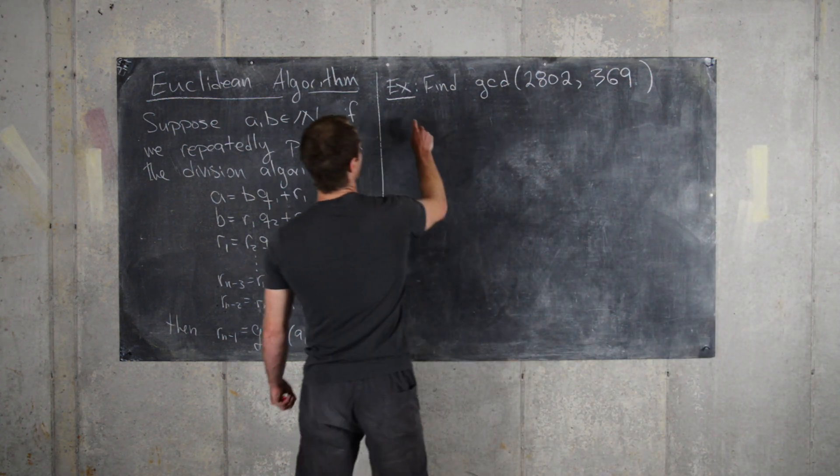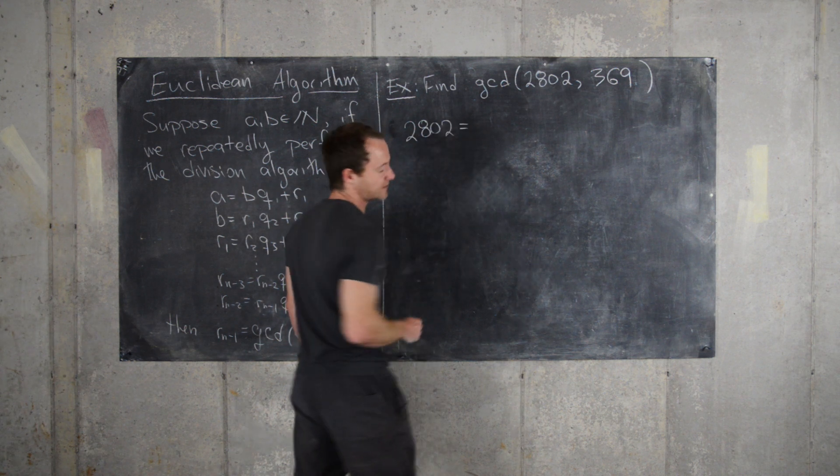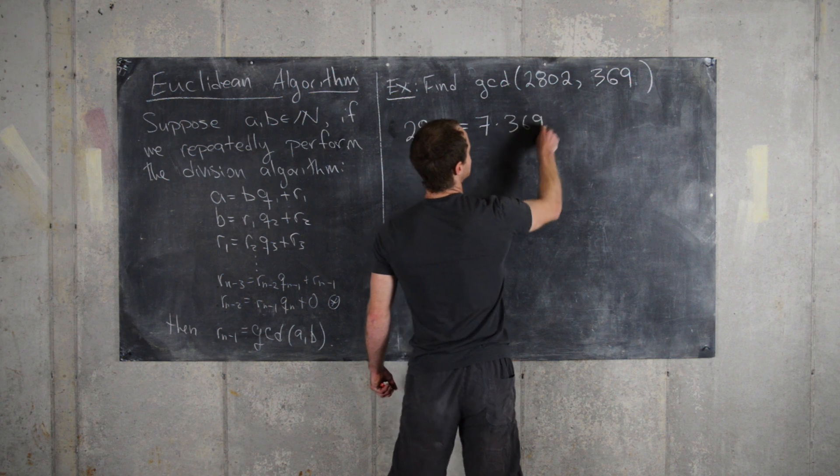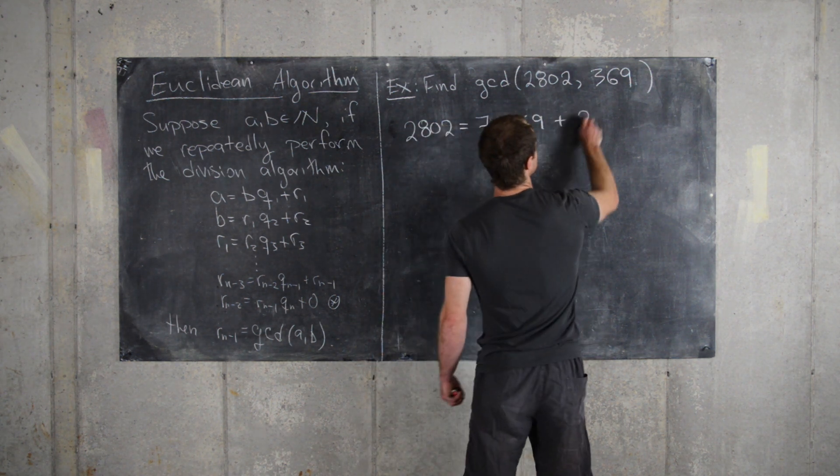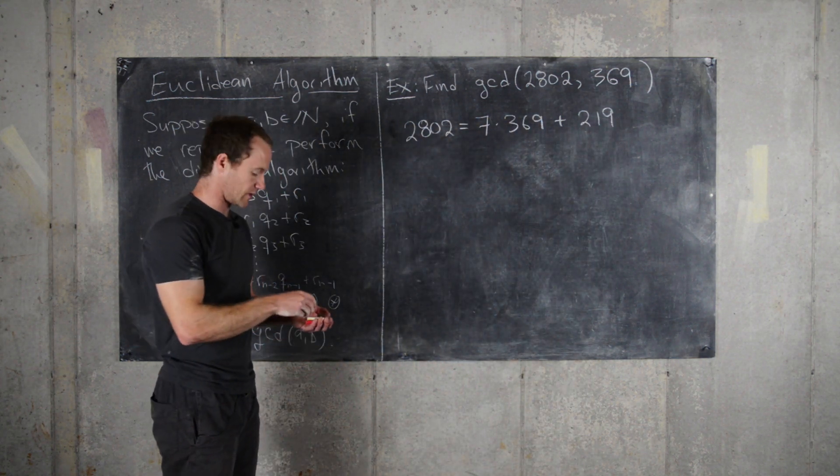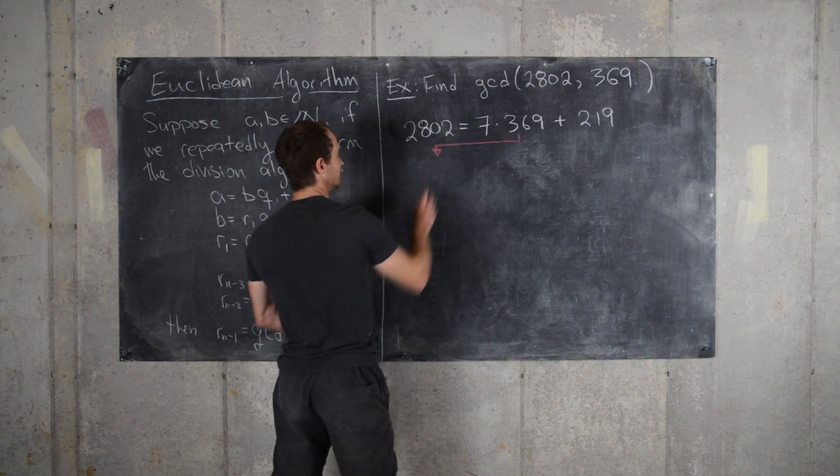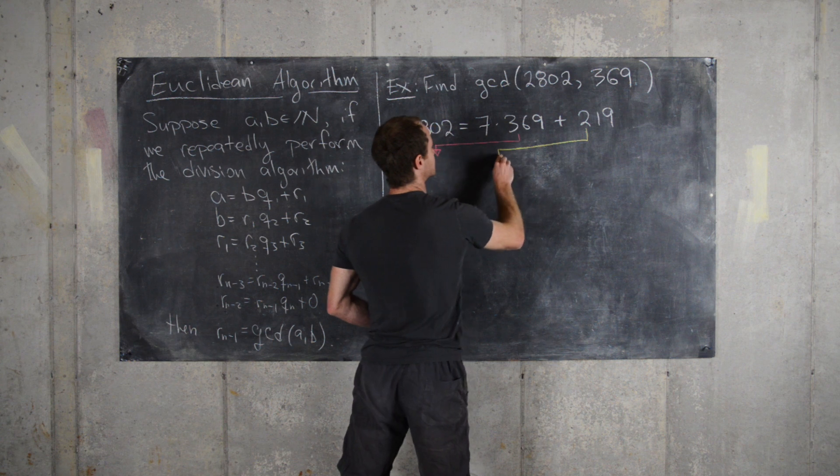So if we do our first round of the division algorithm, we get 2,802 is 7 times 369 plus 219. Now we move everything down and left. So we'll move 369 down here and we'll move 219 down here.